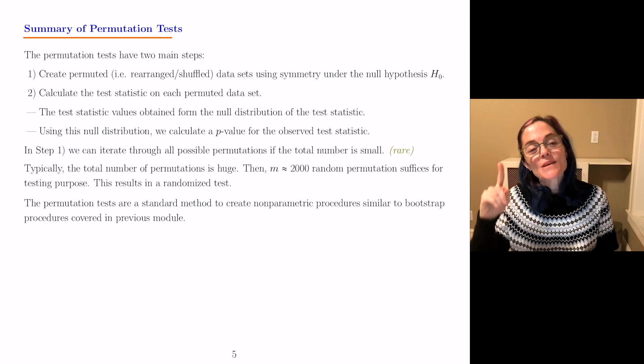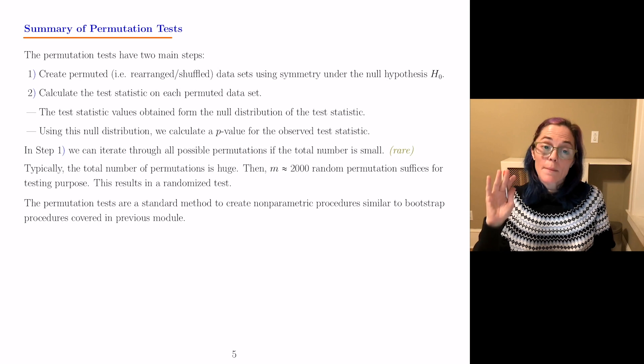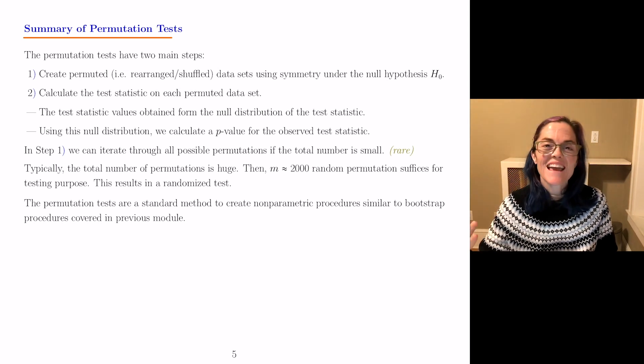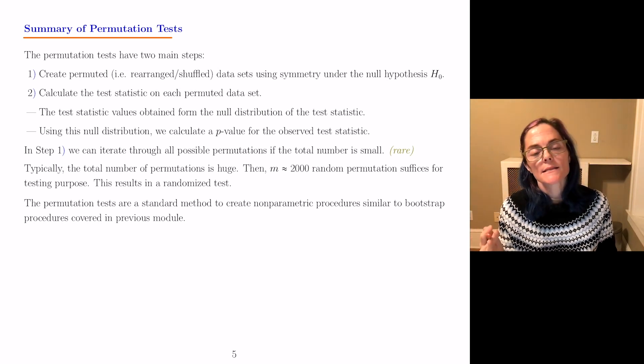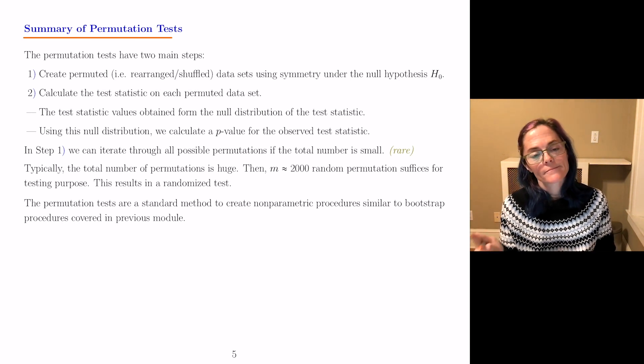Okay, so the permutation tests have two main steps. First of all, you create permuted or rearranged or shuffled data sets using symmetry under the null hypothesis.